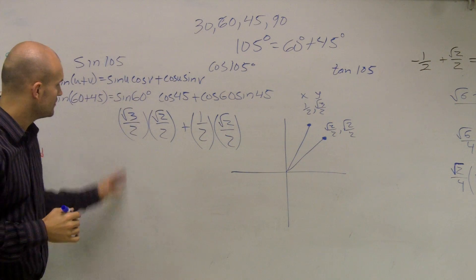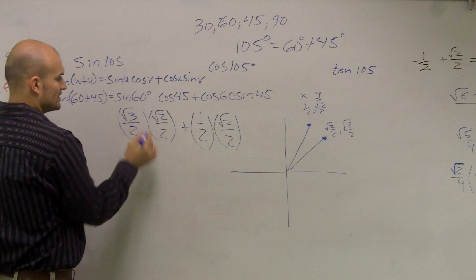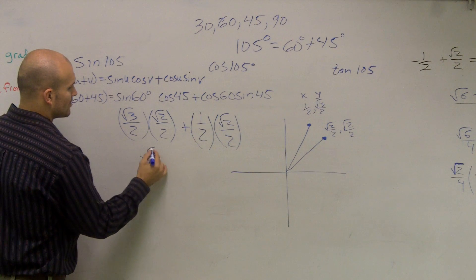Now, what I'll simply do is multiply. Cross radical 3 times radical 2, it's going to give me a radical 6. 2 times 2 is 4. 1 times radical 2.